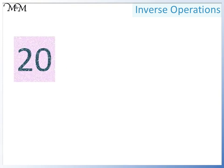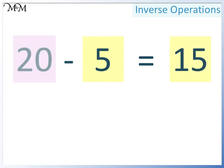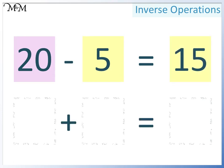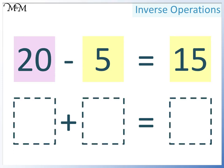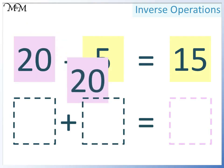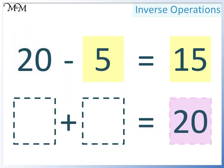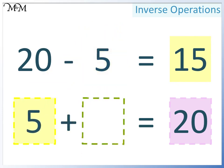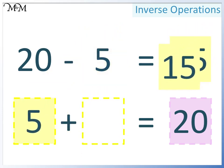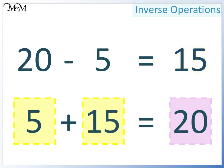Here we have 20 take away 5 equals 15. A large number take away a smaller number equals another smaller number. We want to write this as an addition, where two smaller numbers add together to make a larger number. Our largest number is 20, so 20 must go here. In this space we can have either 5 or 15 — this time we will have 5, so in this space we must have 15. 5 plus 15 equals 20.